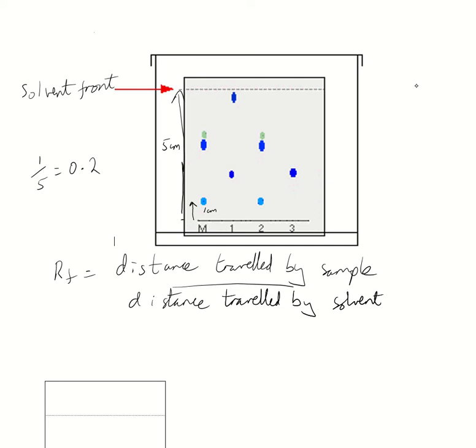So you just repeat that for each and every other dot to say this one was 2 centimetres. Then for this it would just be 2 over 5 and that one is 0.4 there and so forth.